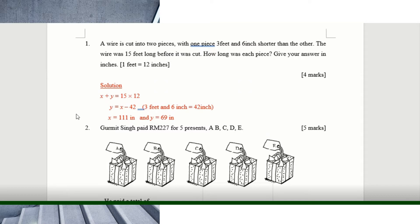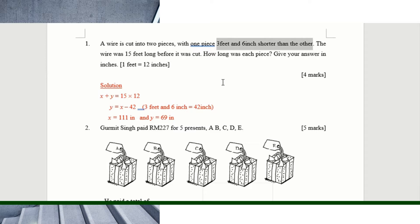Let's look at question one together. A wire is cut into two pieces — one piece is three feet and six inches shorter than the other. The wire was five feet long before it was cut, meaning when you add both pieces up it is actually 15 feet long. The total length of that wire is 15 feet. How long was each piece? Give your answer in inches, and they've given you the conversion: one foot is 12 inches.